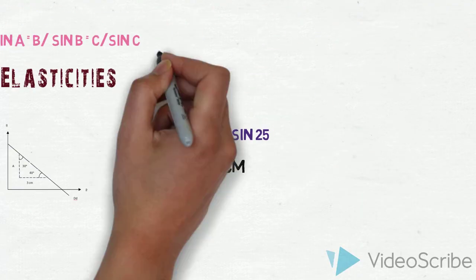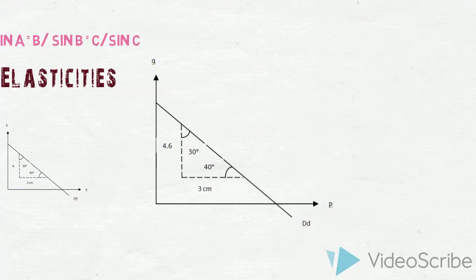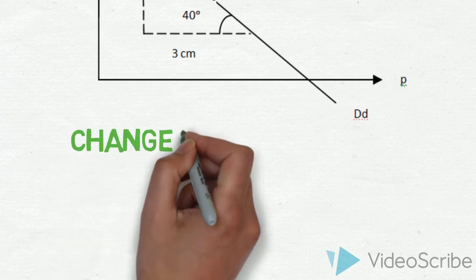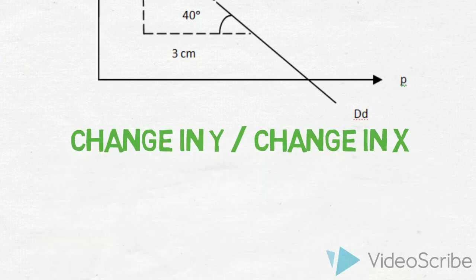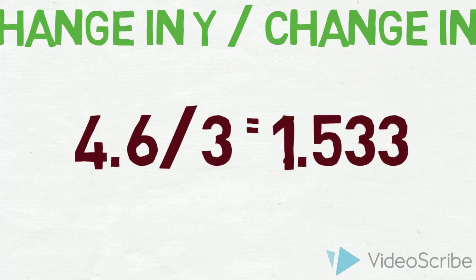Now we can find the slope to find the elasticity. How to find the slope? Change in Y over change in X equals 4.6 over 3. So now you get the answer.